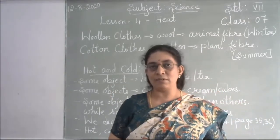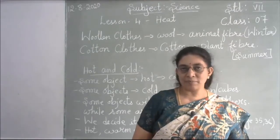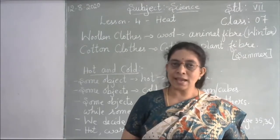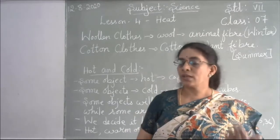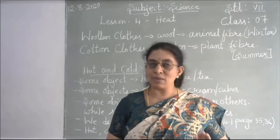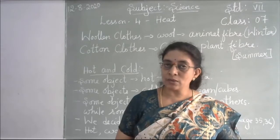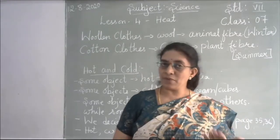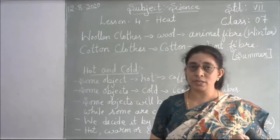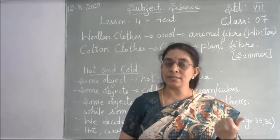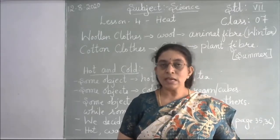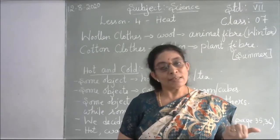In the previous lesson we learnt about fibre to fabric — we covered wool, which we get from animals, and cotton, which we get from plant products. Woolen clothes are made from wool and are used during the winter season. Cotton clothes come from the cotton plant and are used during the summer season.